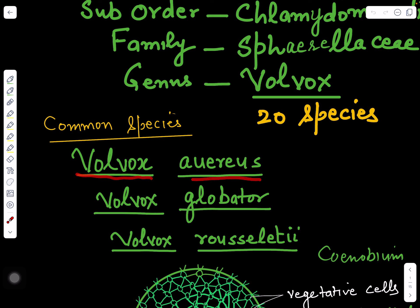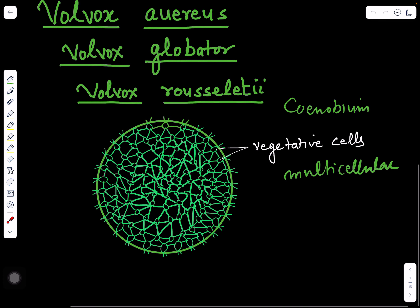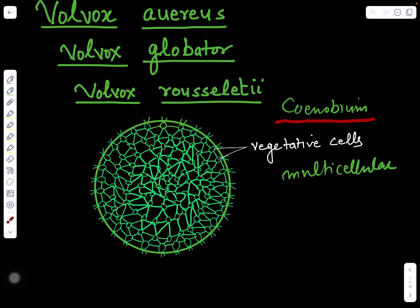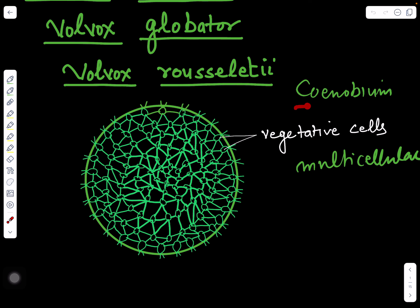Volvox has almost 20 species. The most common species found are Volvox aureus, Volvox globator, and Volvox rouselletae. If you see its plant body, it is in the form of a coenobium — it is multicellular, made up of many cells. These are its vegetative cells which have assembled to form a coenobium, a network of cells.